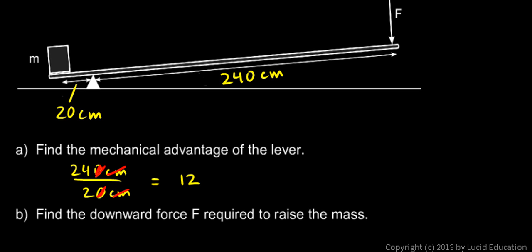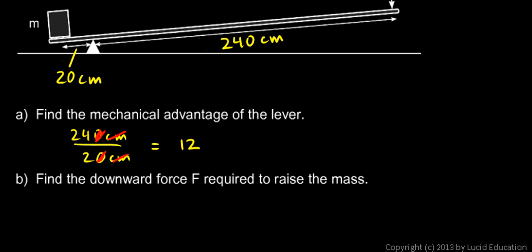Then we're told find the downward force F required to raise the mass. Well, the weight of the mass that we have to lift, the force that gravity pulls down on the mass with, is mg. That's our formula for weight.